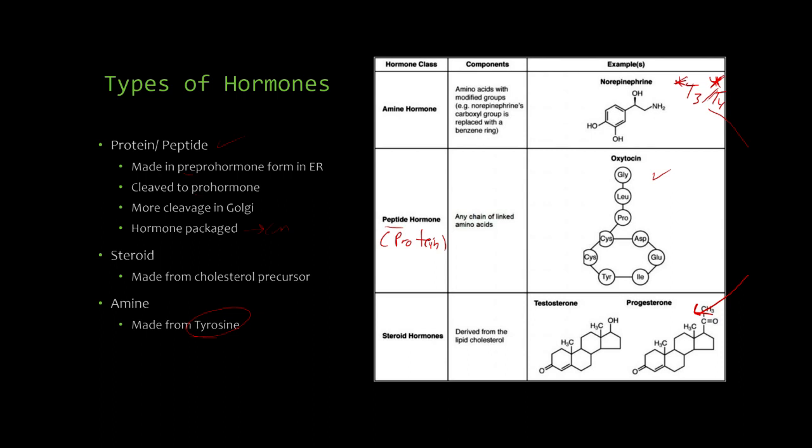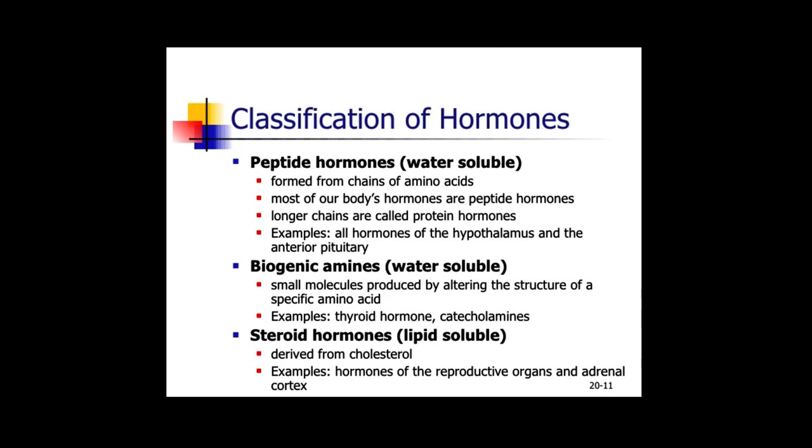That being said, we can move to steroid hormones. They all have in common they're made from a cholesterol precursor, and these are easy to remember because they're the classic sex hormones, right? Testosterone, progesterone, estrogen. There are some other examples you'll see later, but this is an important slide.